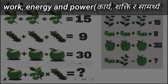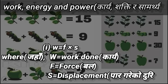Number one: W equals F into s, where W equals work done (karya), F equals force (bal), and s equals displacement (par gariko dhuri). Say it again and try to put it in your mind.